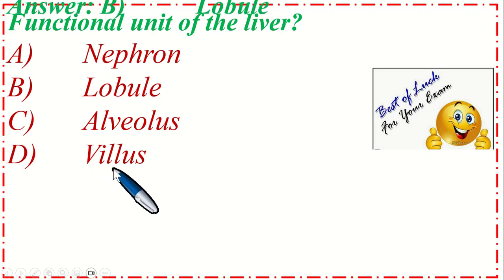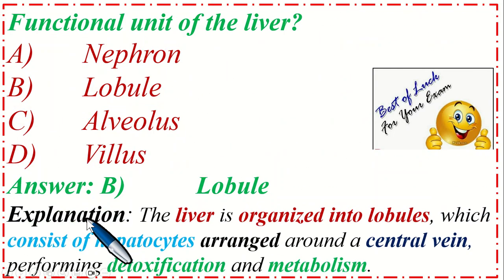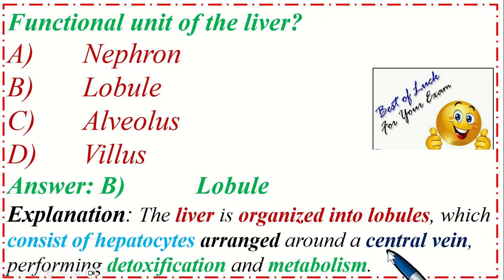The correct option is B, Lobule. The liver is organized into lobules which consist of hepatocytes arranged around a central vein, performing detoxification and metabolism.